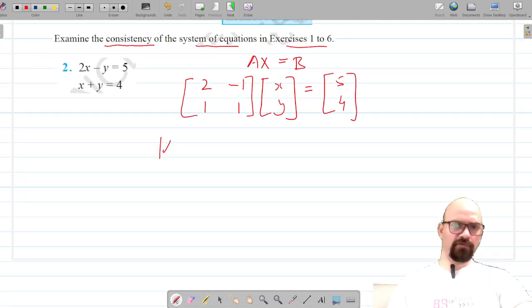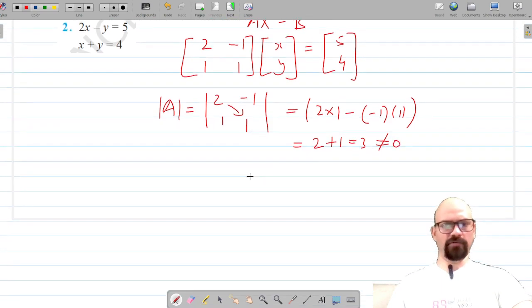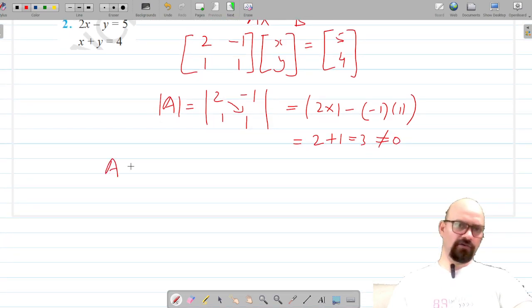What we are going to do is find the determinant of A. So the determinant of the matrix 2 negative 1, 1, 1 equals 2 into 1 minus negative 1 into 1, which gives us 2 plus 1 equals 3, which is not equal to 0. So A is a non-singular matrix.